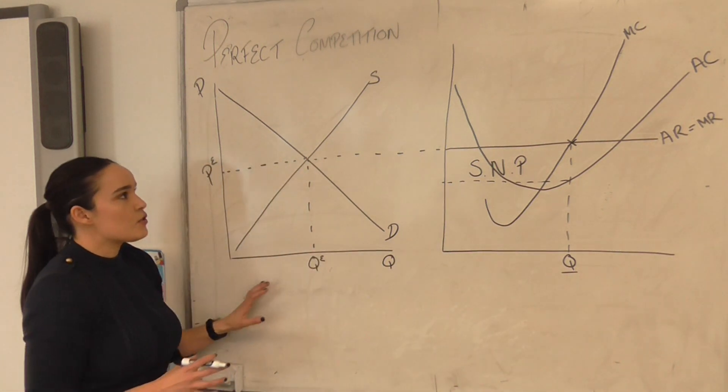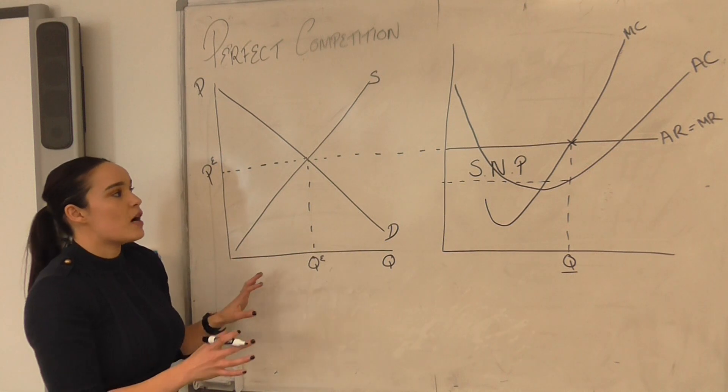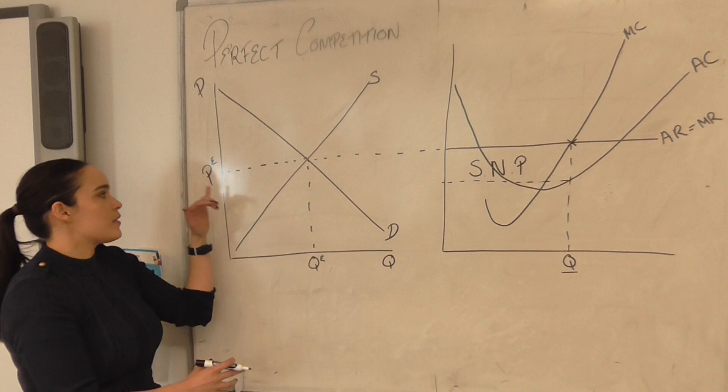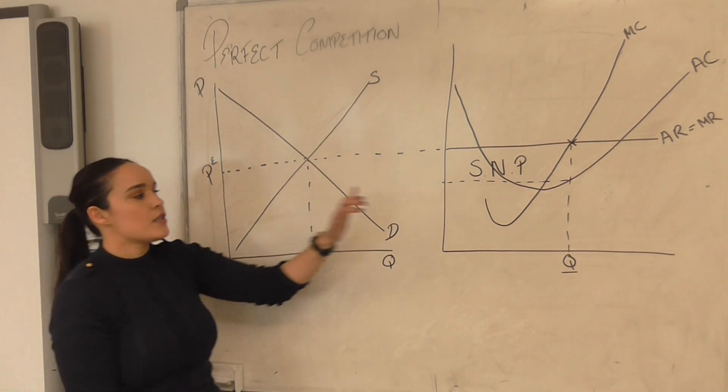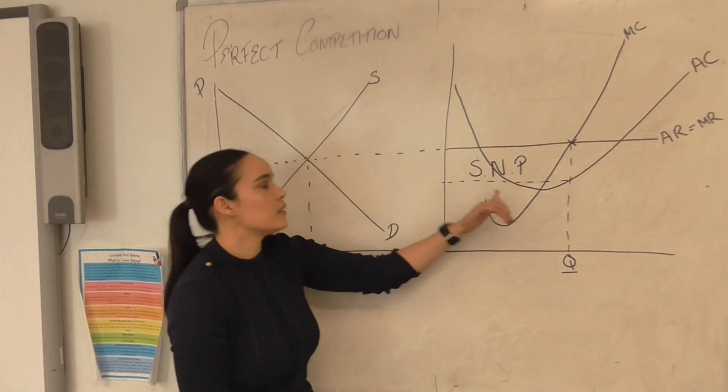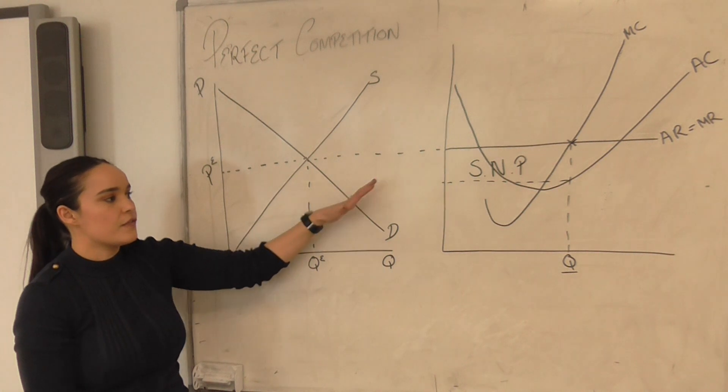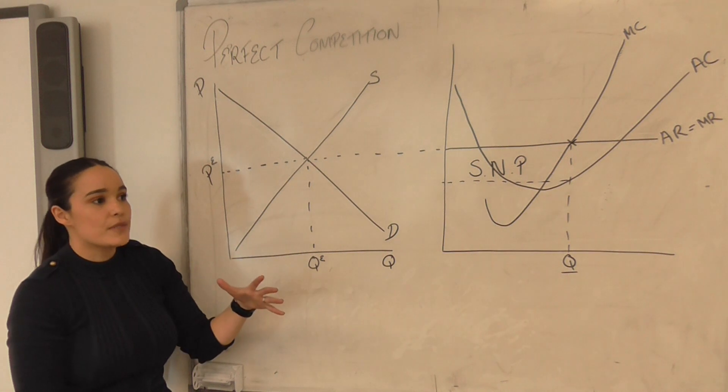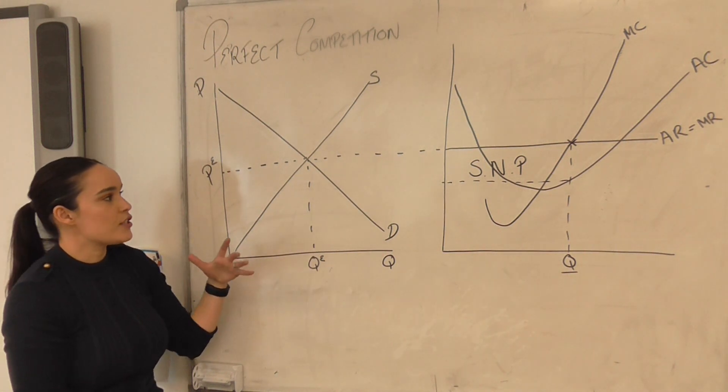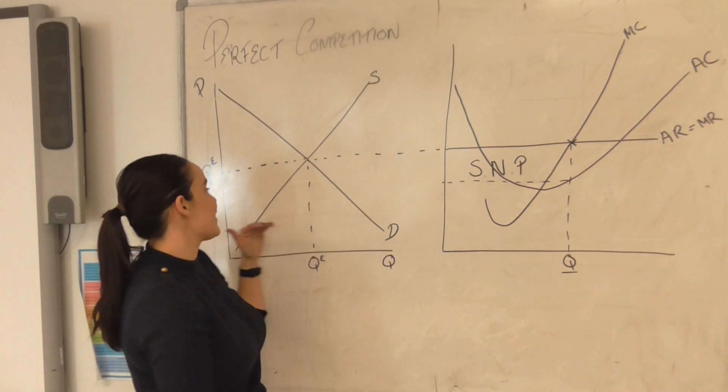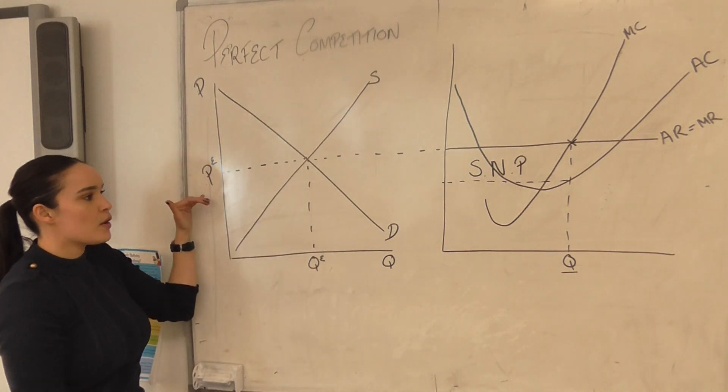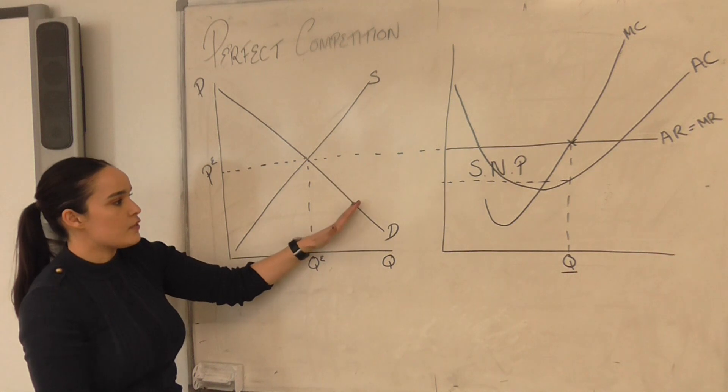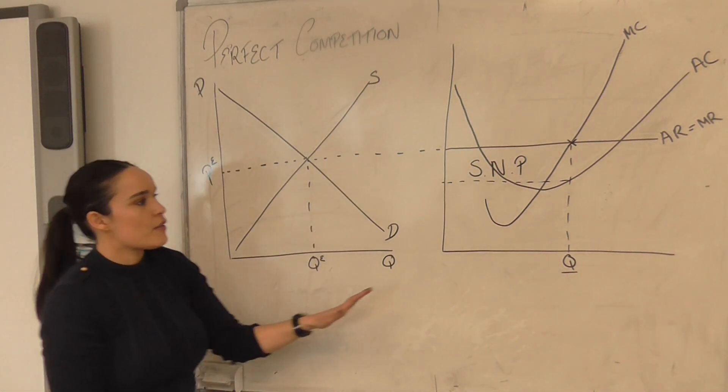So as that happens in the industry we know that normal market mechanisms here apply, so our supply curve at the same price level in the market, supernormal profits acting as a signal, so our supply is going to shift out. So our supply is going to shift out as more firms enter the market, and as our supply shifts out obviously our price equilibrium will fall.